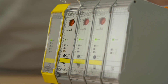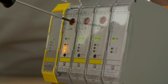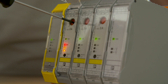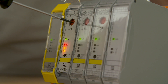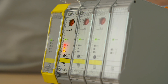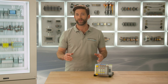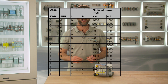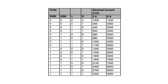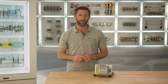Now we can set the nominal current with this rotary potentiometer in 16 levels. Look at these four LEDs — the combination of them flashing indicates the adjusted current. The translation of this light code can be found on this table, which is contained in each Kontaktron operation manual and can also be downloaded at the Phoenix Kontakt homepage.